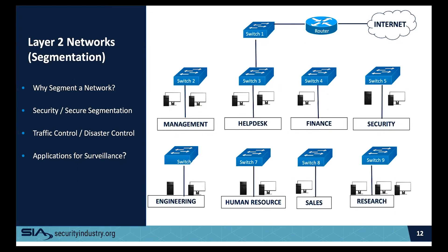At Calgary Airport, 150 cameras in a single VLAN caused the cameras to become non-responsive. There was so much cross-traffic between cameras that every third ICMP echo to a camera was being dropped, leading to intermittent video and all kinds of issues.